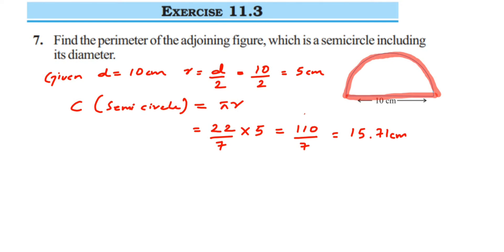Now we have to find out the complete perimeter of the given figure. So when we find this, this will be nothing but the circumference of the semicircle plus the diameter.